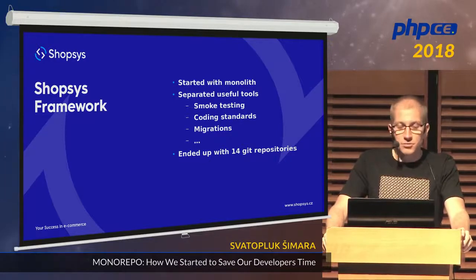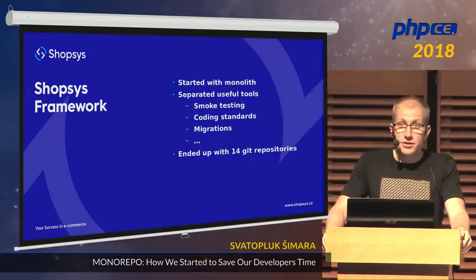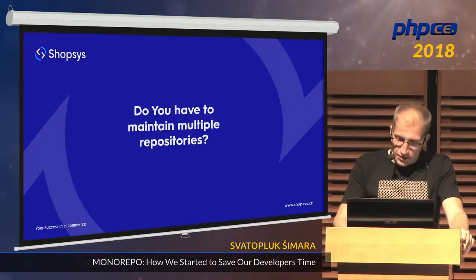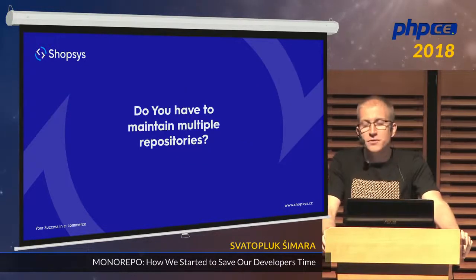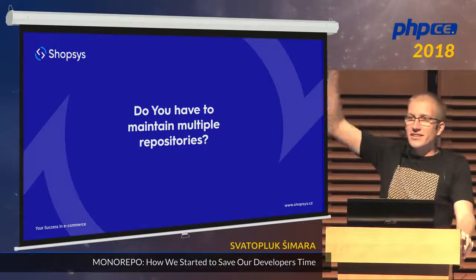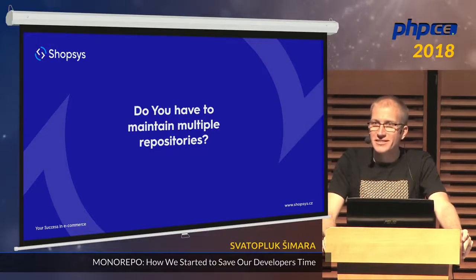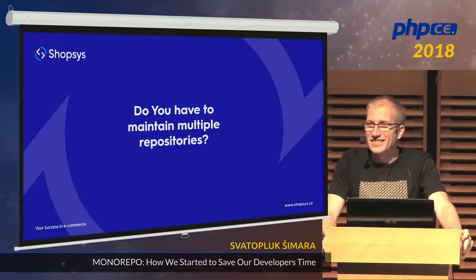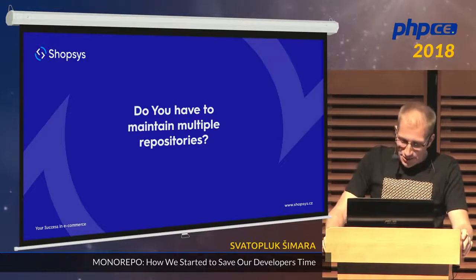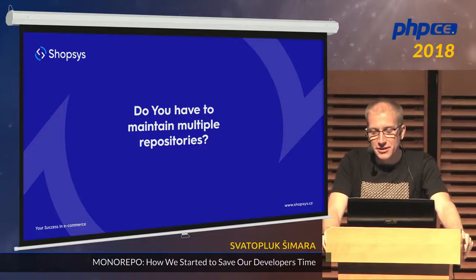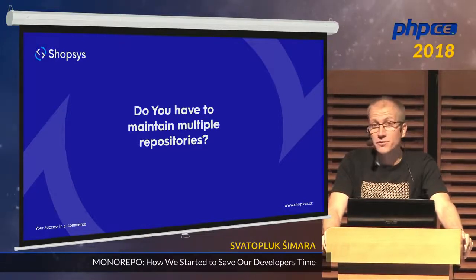And we ended up with 14 repositories — 14 repositories that are dependent on each other. Is there anyone here who has to maintain multiple repositories? Are these repositories connected somehow? Yes, it's fun, right? So we also have this scenario and we had a couple of problems.